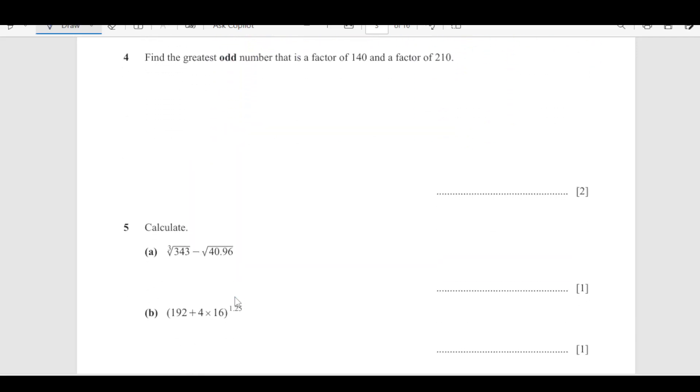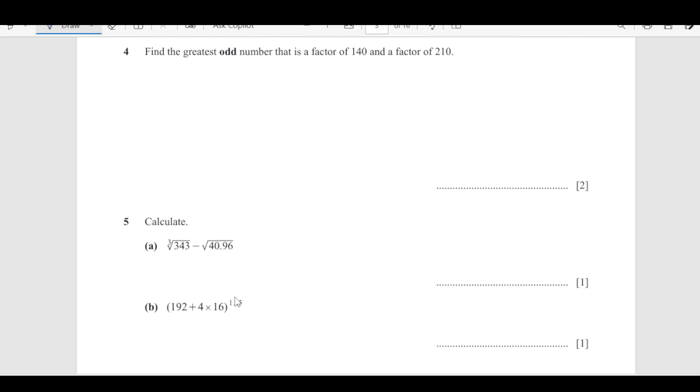Now, number 4, find the greatest odd number that is factor of 140 and factor of 210. 140 factors are 10 and 14. Then this is going to be 2 times 5, this is going to be 7 times 2. So, odd numbers are here 5 and 7. On the other side, we have 10 times 21. This is 2 times 5 and this is 7 times 3. Again, we have 5 and 7. So, that number is going to be 35. Greatest odd number.